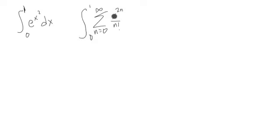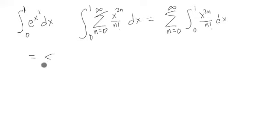Now we integrate, and we can do this term by term. So we have 0 to 1, x to the 2n, n factorial dx. Alright, take an antiderivative, and we get x to the 2n plus 1, all over 2n plus 1, times n factorial, and we're going from 0 to 1.